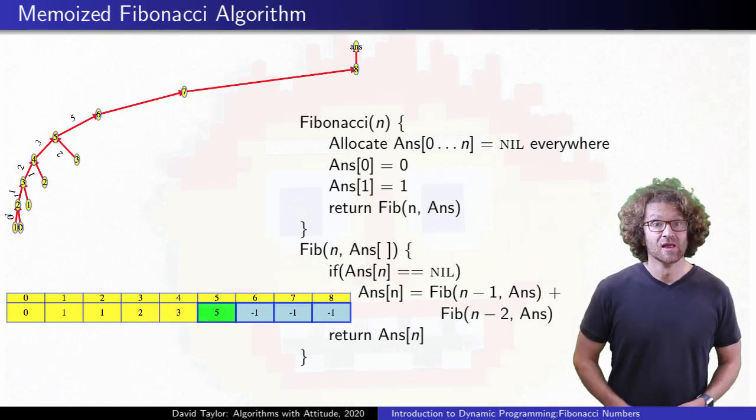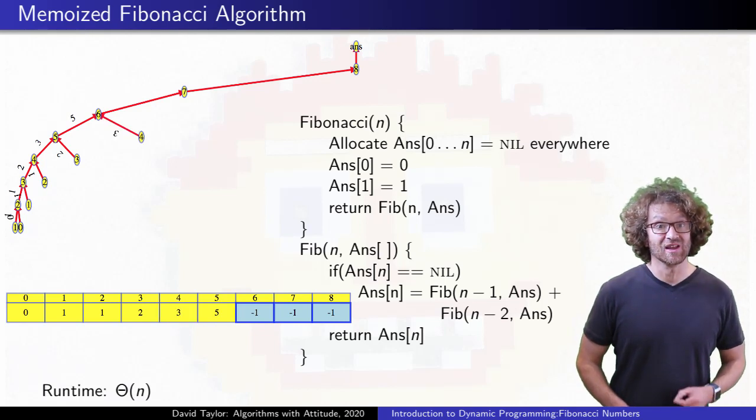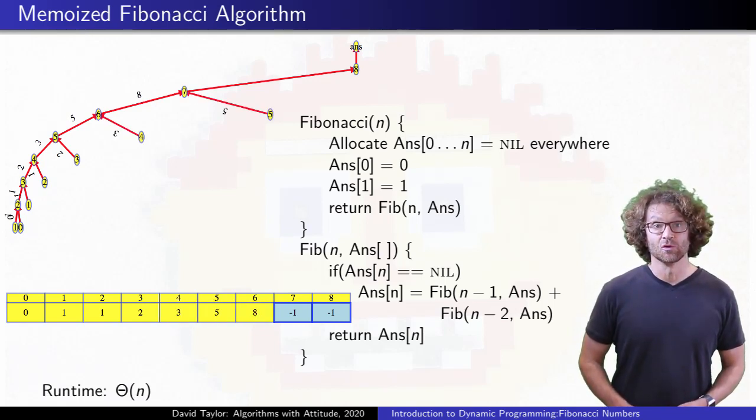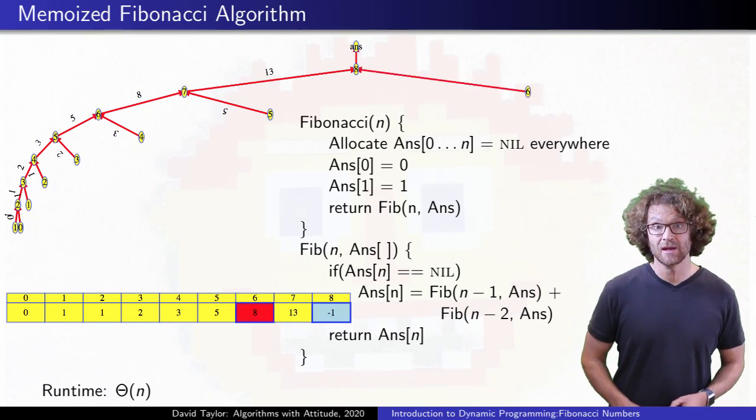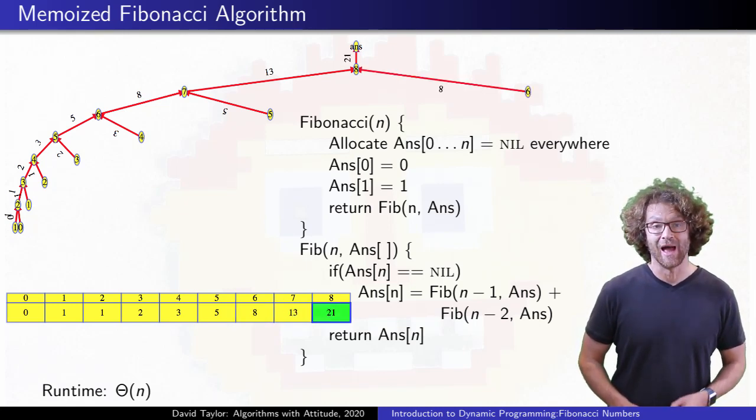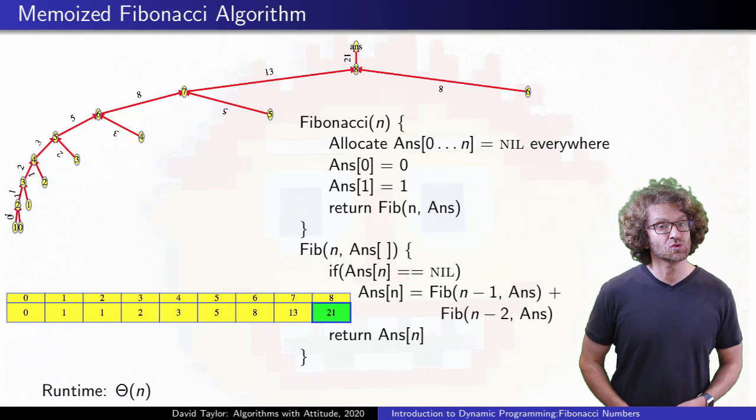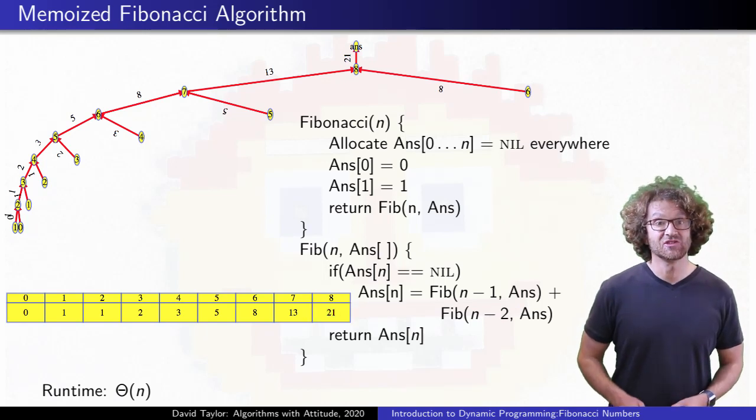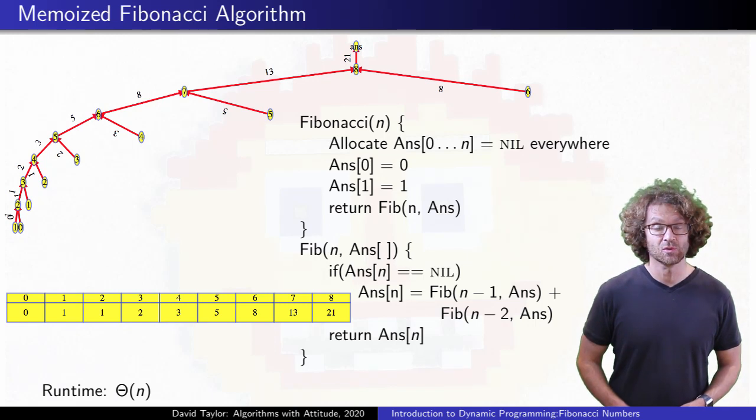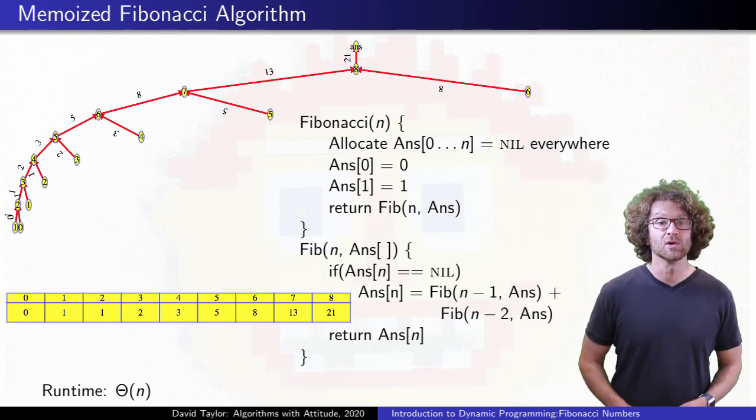In the tree, the left spine of the problem looks exactly the same as before, and each of those first time calls you make to compute the ith value has a subtree. But once you leave that spine, the second time you try to compute the ith value, you just look up the answer without any recursive calls, pruning that subtree down to just a leaf.